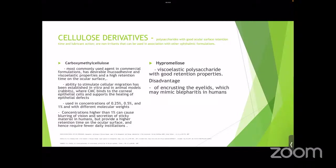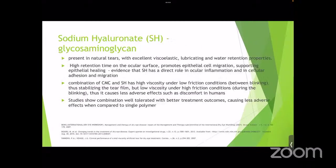Hypromellose is another cellulose derivative — a viscoelastic polysaccharide with good retention properties, but it has a disadvantage of encrusting the eyelids. Moving on to sodium hyaluronate, a glycosaminoglycan present in natural tears with excellent viscoelastic, lubricating, and water retention properties. It has higher retention time, promotes epithelial cell migration, and there is evidence it has a direct role in ocular inflammation and cellular adhesion. A combination of CMC and sodium hyaluronate has high viscosity under low friction — between blinks — stabilizing the tear film, but low viscosity during the blink, causing fewer adverse effects.